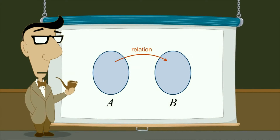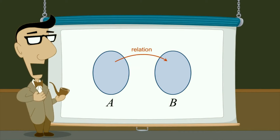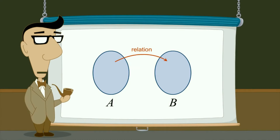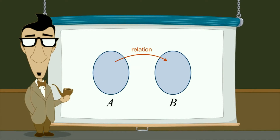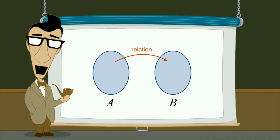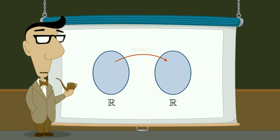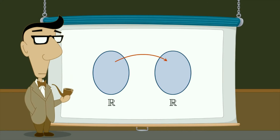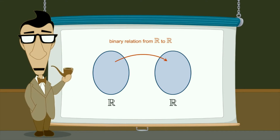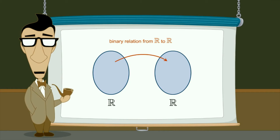We have illustrated binary relations between sets containing various types of elements. But often in algebra, the sets which are related are both equal to the set of real numbers ℝ. In this case, we can either say that the binary relation is from ℝ to ℝ, or more simply, that the binary relation is on ℝ.